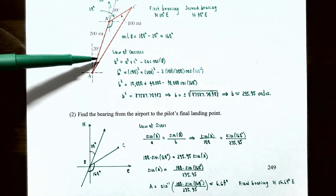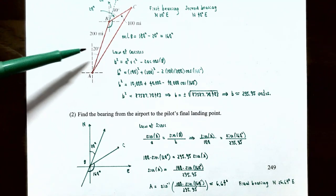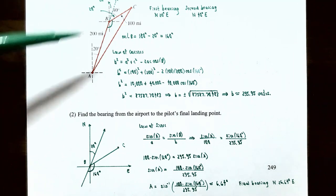Angle A is 6.64°, but we need the bearing east of due north, so we add the original 20° bearing: 6.64° + 20° = 26.64°. The final bearing from the airport to the landing point is N26.64°E. This concludes our video on the law of cosines — we covered solving oblique triangles and applied problems. See you in the next video on trigonometric identities.